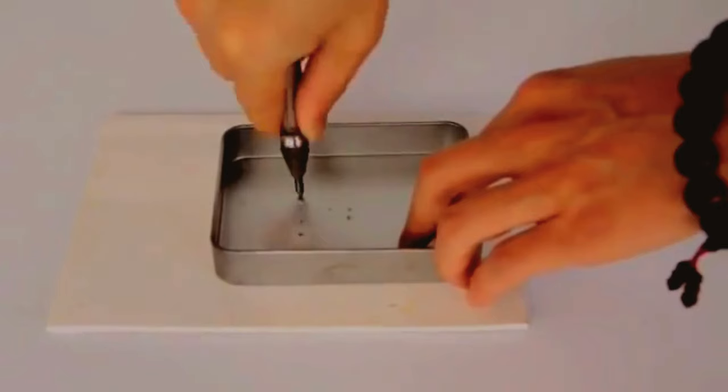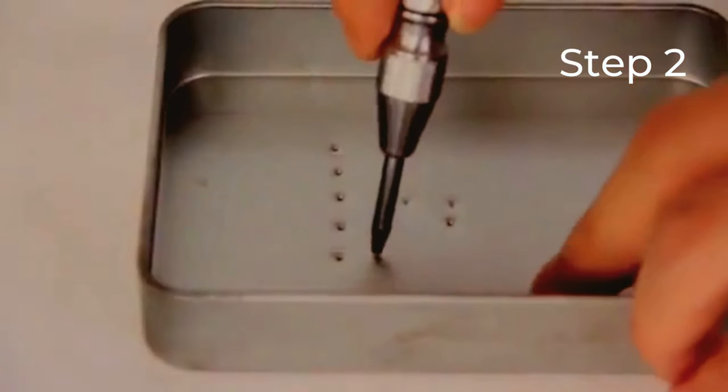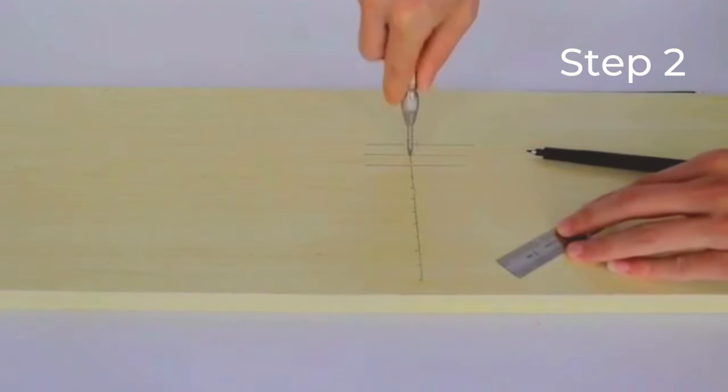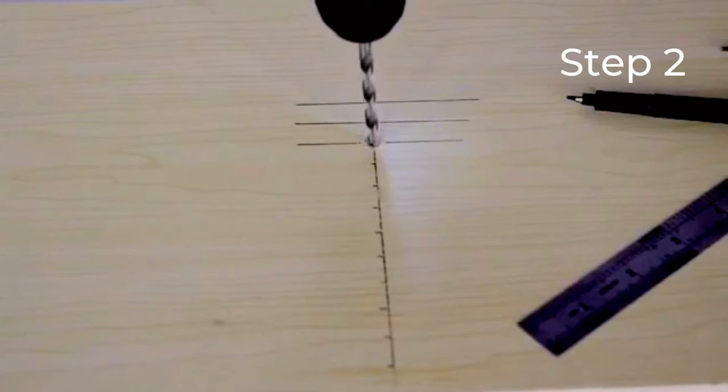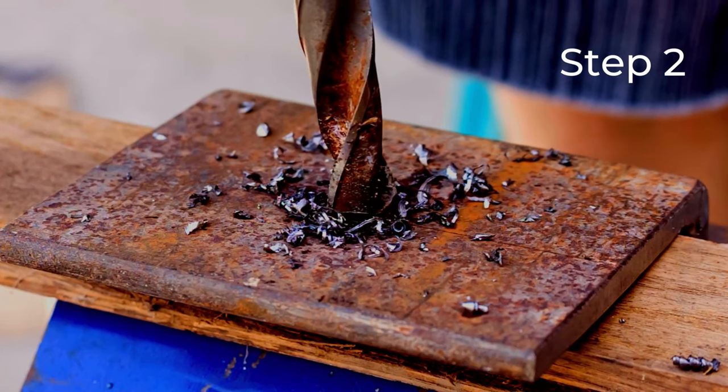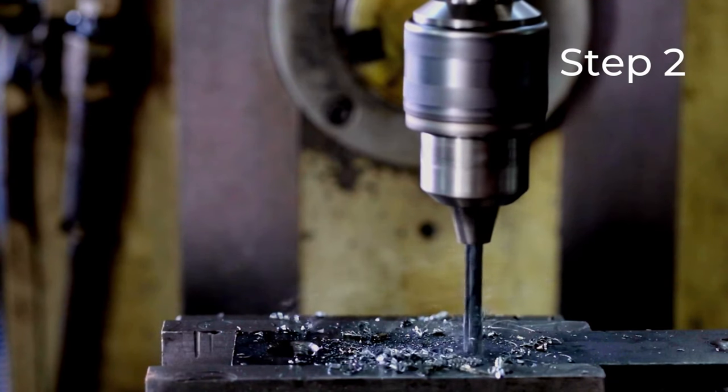Step 2, Use the center punch to create a small indentation in the stainless steel where you want to drill. This will help keep the bit from wandering and ensure a more precise hole.